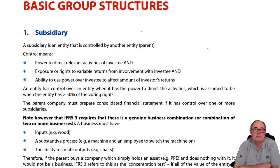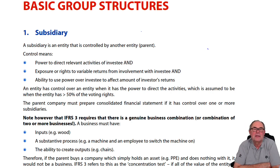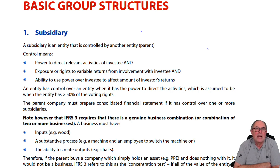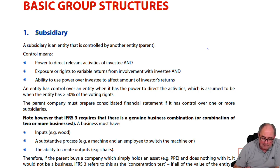When you first learned about a subsidiary, the rule of thumb was more than 50%, and the method of accounting was consolidation. Well, consolidation is still true, but in some circumstances, as we'll see later, you can have a subsidiary even if you don't own 51% of the shares. Now, subsidiary is umbilically linked to the word consolidation.